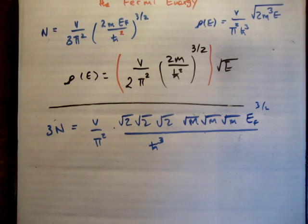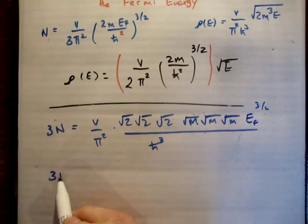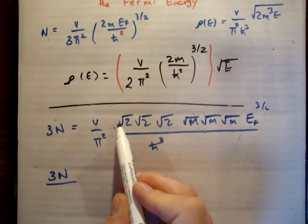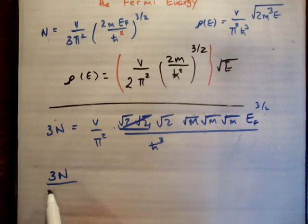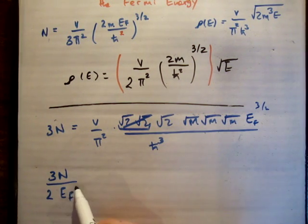So now what do I want to do? Well, if I rearrange it by bringing down my Fermi energy, so we now have 3N, and I'm going to bring down two of these, like that. So we're going to get twice E Fermi to the 3 over 2.